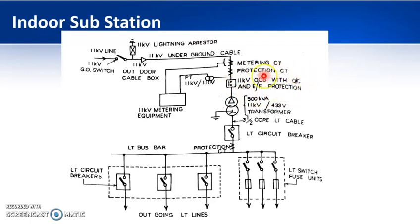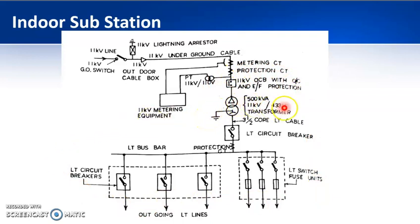From the protection CT, the supply is given to an 11 kV oil circuit breaker, and from the circuit breaker it is given to the transformer. From this point onwards, everything is housed inside the substation. You will have an 11 kV by 433 volt transformer with secondary delta-star connected, and therefore you are using a three-and-a-half core LT cable. From there it goes to the LT circuit breaker.